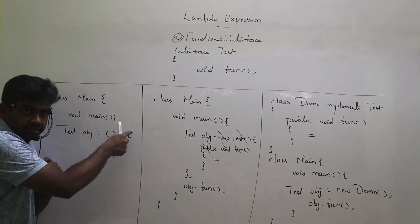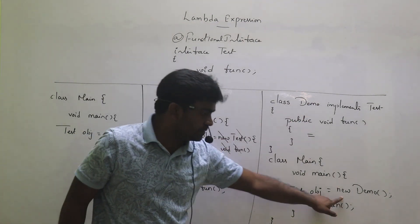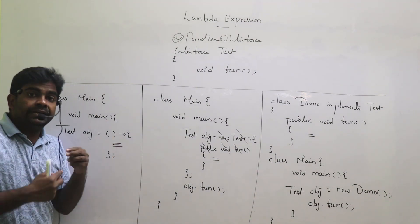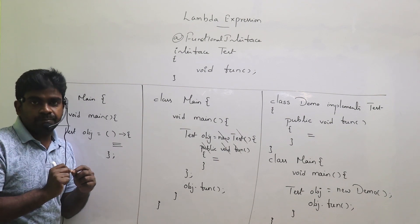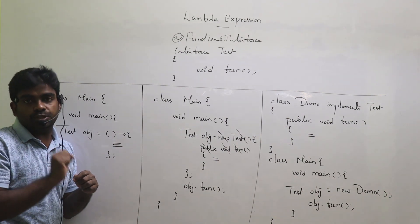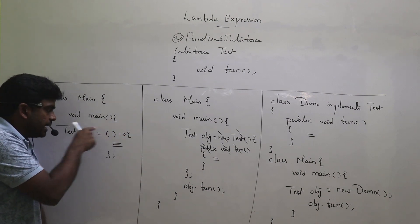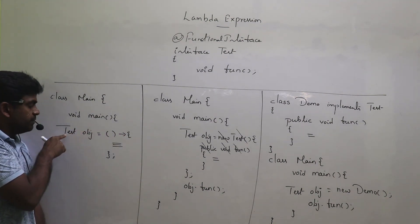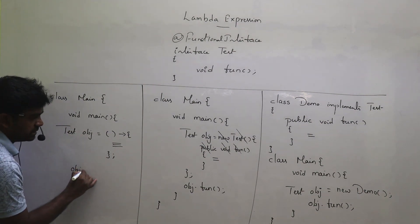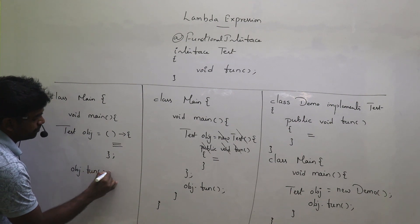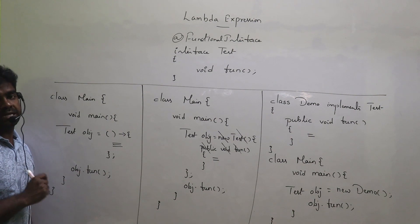This lambda expression is an object — just as the anonymous class was an object. So in interviews, when they ask what is a lambda expression, the answer is: a lambda expression is an object; it is the implementation of a functional interface. That's why you collect that object reference into a variable of interface type. And then you access it the same way: obj.fun().